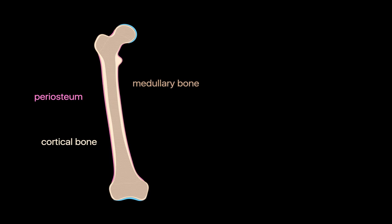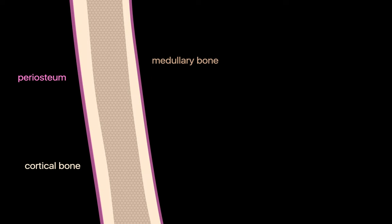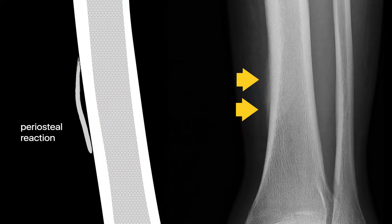A thin, several-cell-layer thick membrane known as periosteum covers every surface of a bone except for the areas covered by hyaline cartilage. Whenever cortical bone is insulted and the periosteum is torn, stretched, or inflamed, a periosteal reaction may occur, which lays down a new layer of bone that's often visible on x-ray.